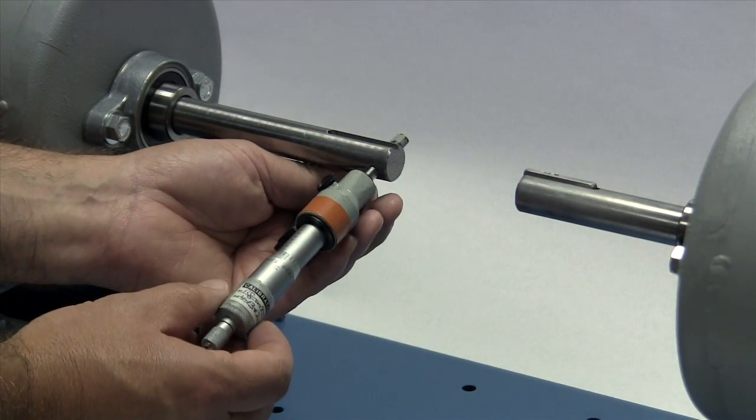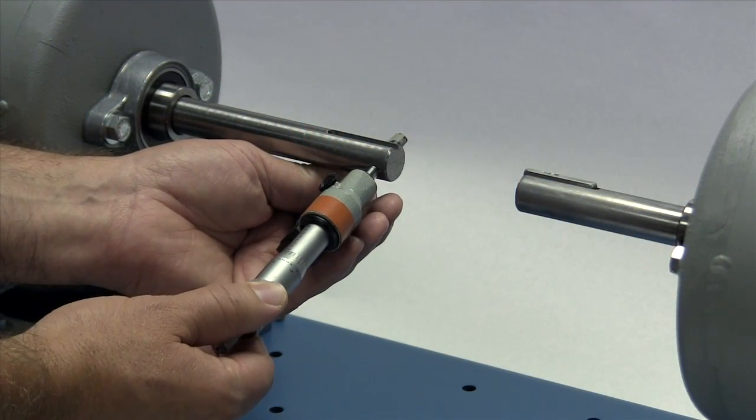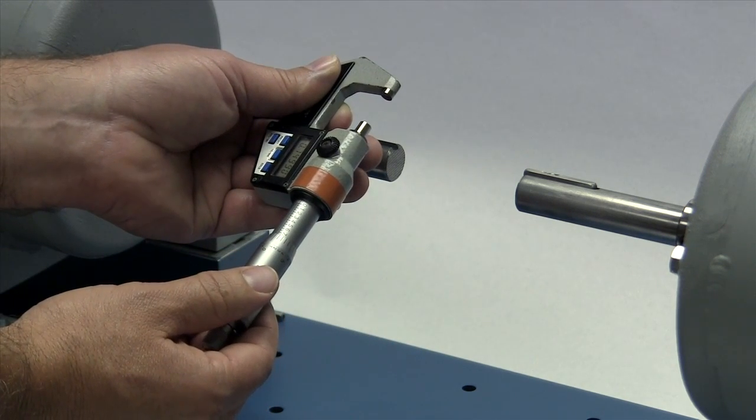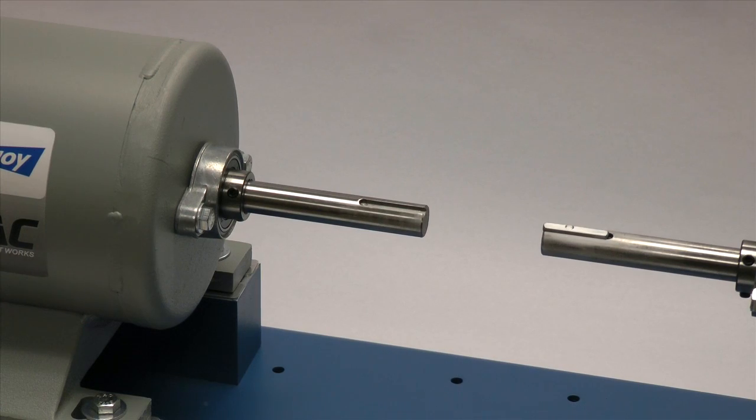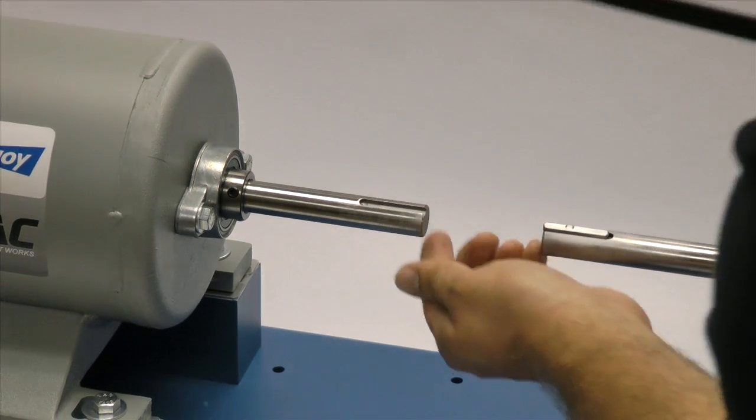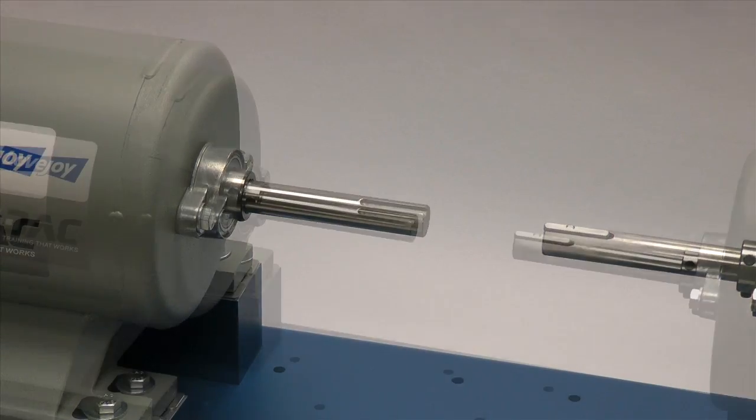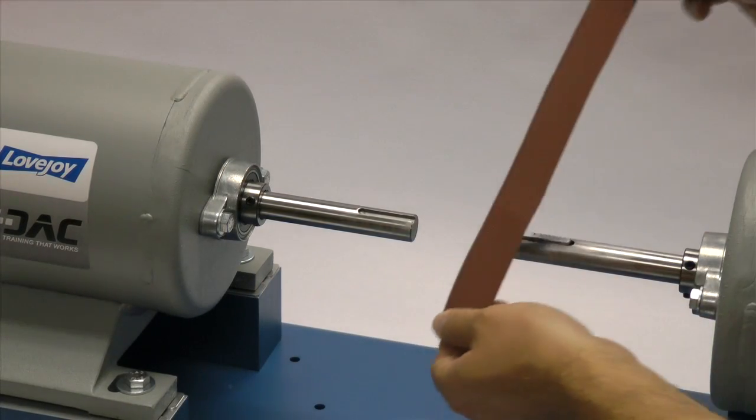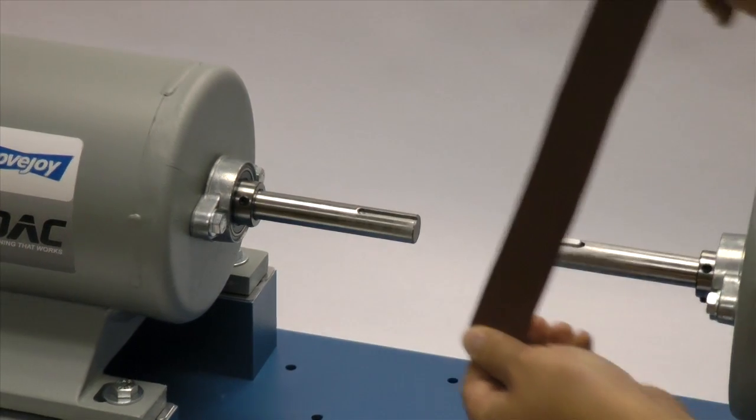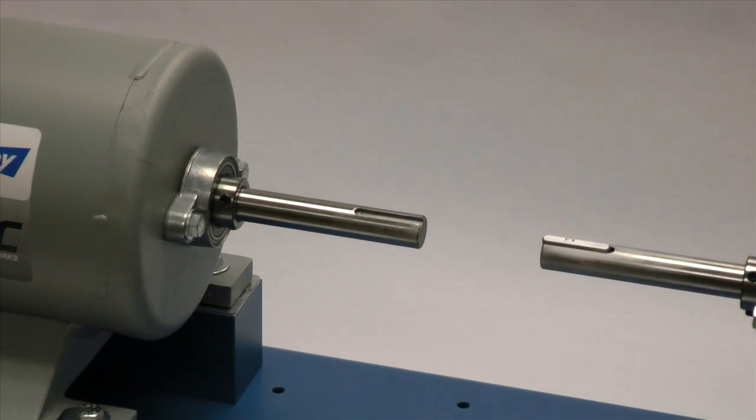If not done already, you should measure the shaft and ensure that the shaft diameter matches the coupling bore size. Then inspect the shaft and clean up any nicks or burrs from the keyway or shaft diameter. A fine tooth file can be used to clean burrs from the edge of the keyway or large dents in the shaft. The emery paper can be used to clear the shaft of rust or any fretting corrosion.